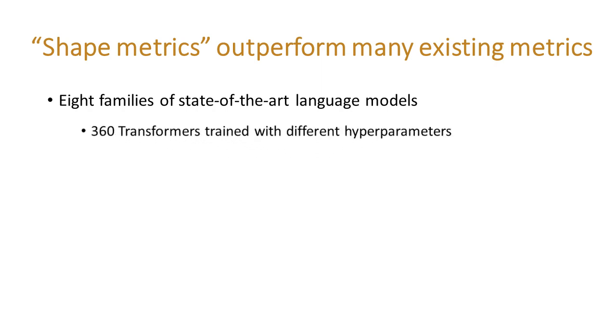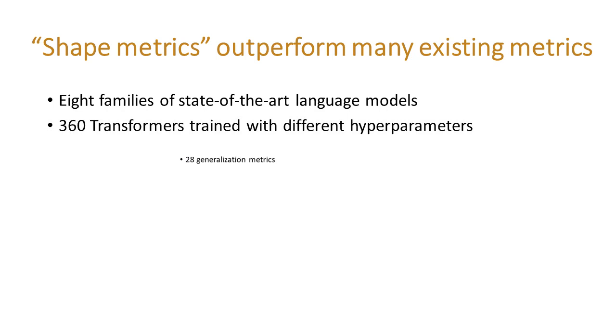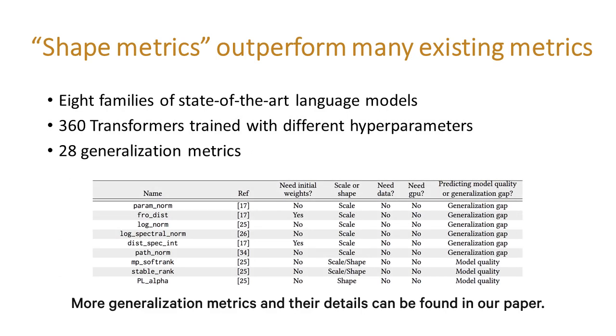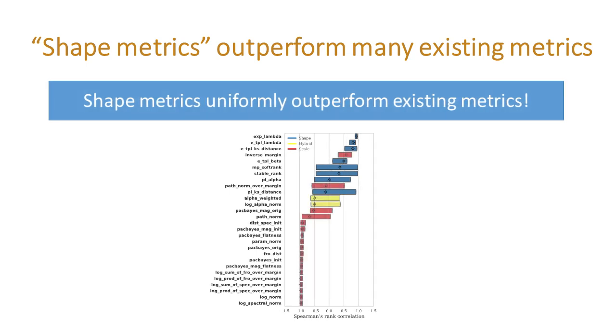We trained 360 transformer models with different hyperparameters and systematically studied 28 generalization metrics. We show that our shape metrics uniformly outperform existing generalization metrics when used to predict model quality.